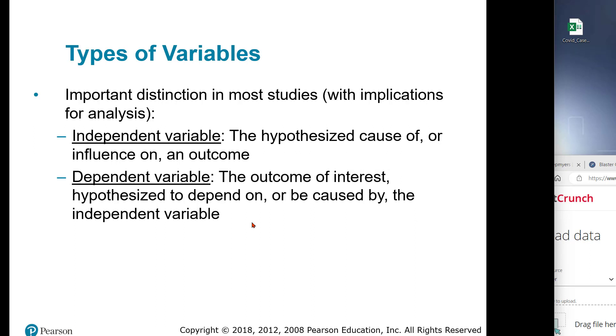The other one is the independent variable. It is the hypothesized cause of or the influence on the outcome. It's often just the group they were in. Did they get the treatment, or did they get the placebo? That's an independent variable, it just happens to be the group they were in or something causing the outcome. We will see more examples of these as we analyze data in the course.